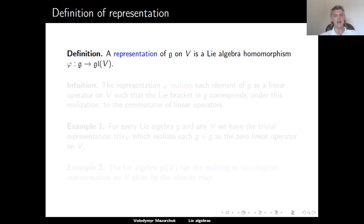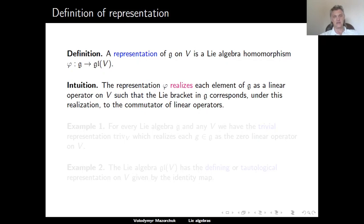Now we can define the notion of a representation. A representation of our Lie algebra g on v is a Lie algebra homomorphism φ from g to gl(v). The representation φ realizes each element of our Lie algebra as a linear operator on v, and this realization should be constructed such that the Lie bracket in g corresponds to the commutator of linear operators.